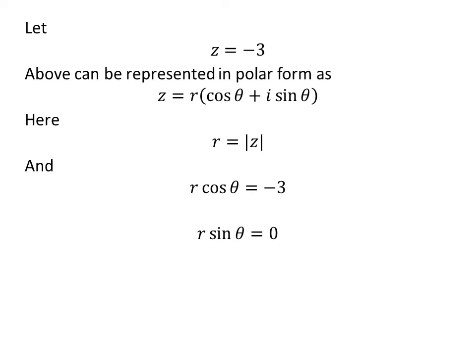Here, r is equal to modulus of z, and r times cosine of theta is equal to minus 3, and r times sine of theta is equal to 0.